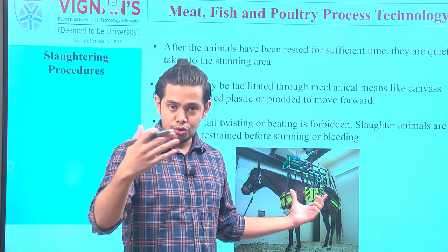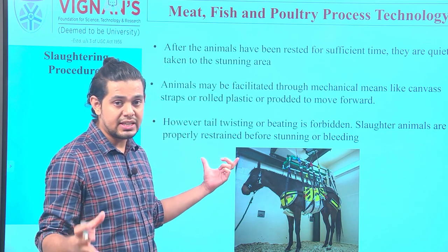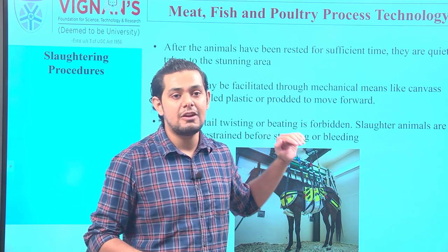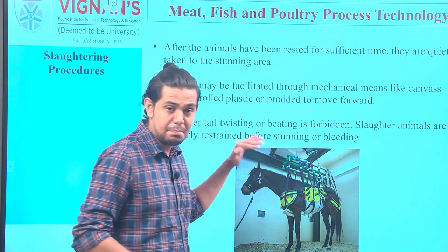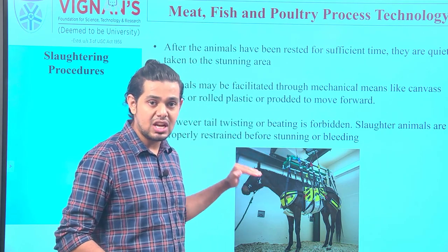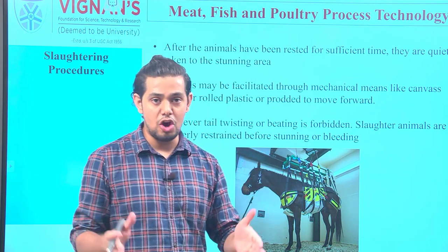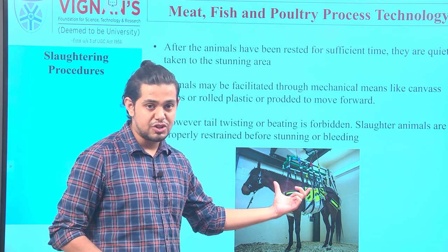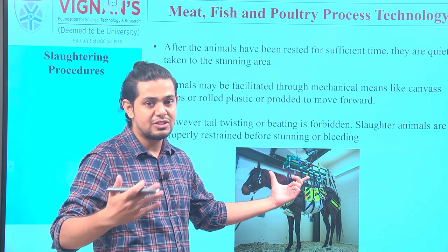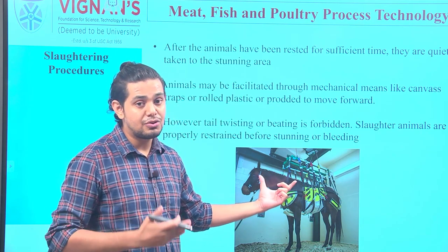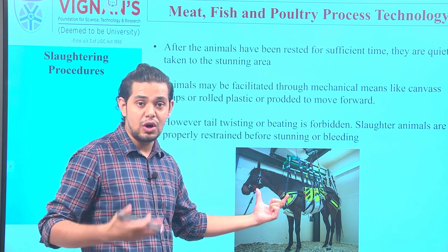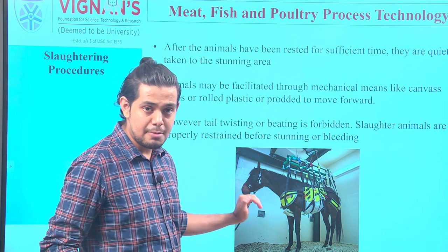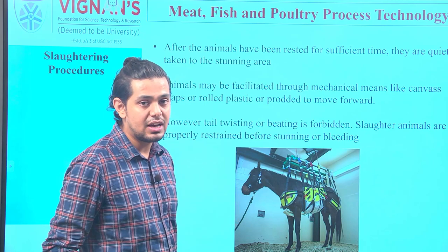If the animal is resisting moving forward, it is of utmost priority that one must never follow tail twisting or beating of an animal — these two things are effectively forbidden. There are certain laws governing this so the animal is not subjected to torture. Whatever slaughtering process we are adapting, the animal must not be in any kind of discomfort or pain; humane methods of slaughtering must be employed in every slaughtering industry.